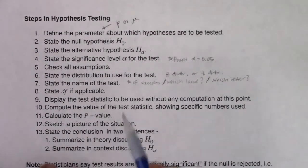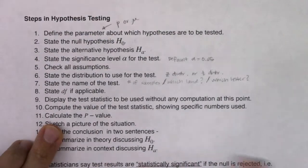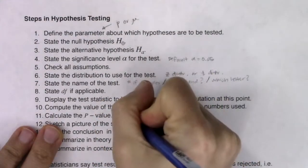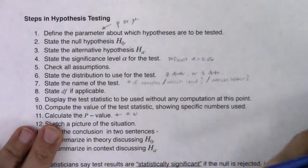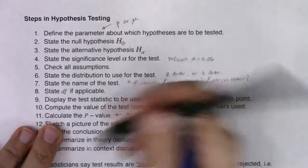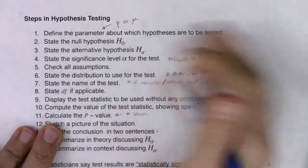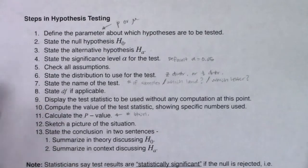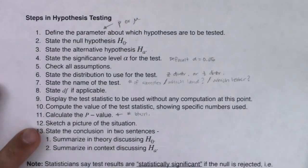For step eleven, you're going to get the p-value — a probability between zero and one — and it's going to help us decide whether to reject or fail to reject the null. We're going to use TCDF because we're on the t-distribution, not the normal distribution. Step twelve is to sketch a picture of the situation.